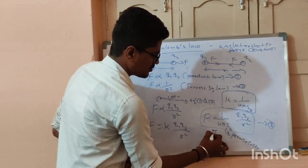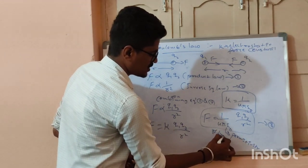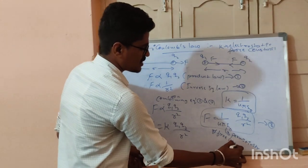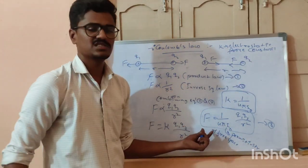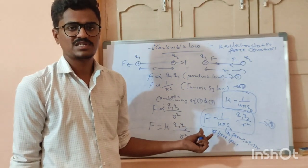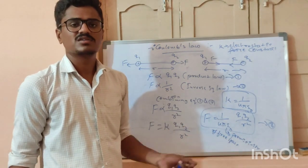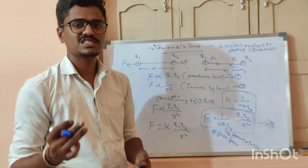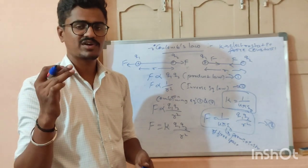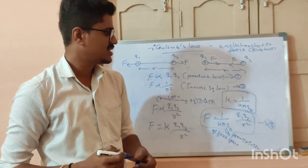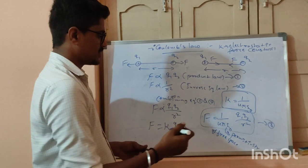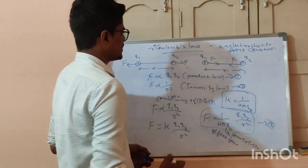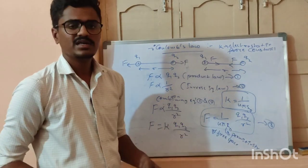Epsilon naught means the permittivity of free space. The constant value of epsilon naught is 8.854 into 10 to the power negative 12.